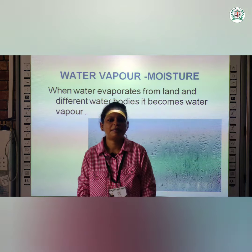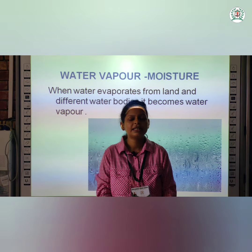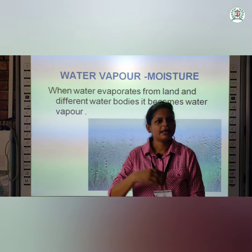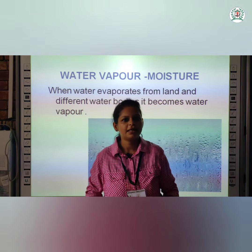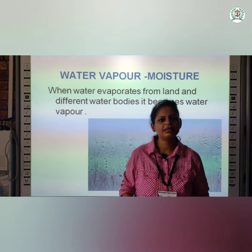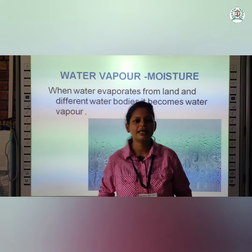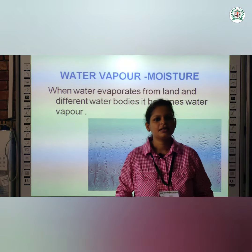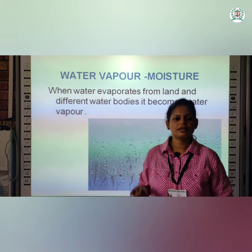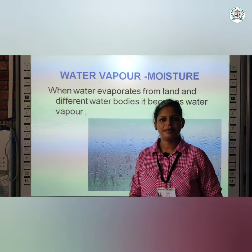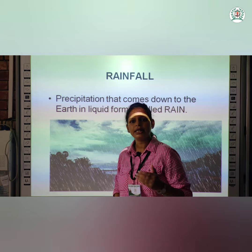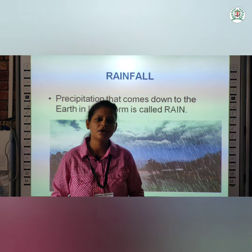The next topic is water vapour. What is water vapour? When water evaporates from the land and the water bodies above on the earth, that becomes water vapour. Water bodies are like sea, ocean, lake, and river — whatever water evaporates from them forms the water vapour. And when precipitation happens and the liquid form falls on the earth, that is called rain.